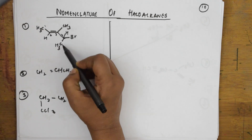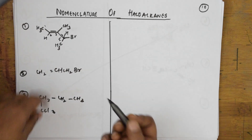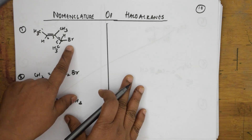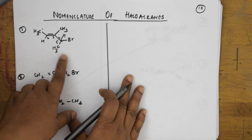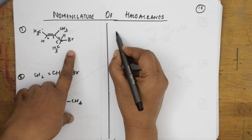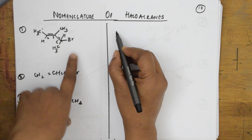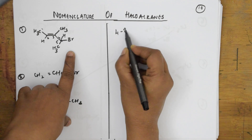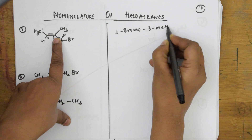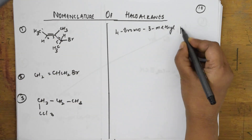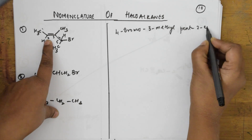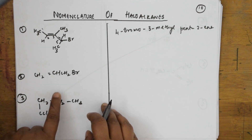According to alphabetical order, first I take bromo, then methyl. The substituent at the third carbon is methyl, and the parent chain has five carbons. At the second carbon there is a double bond, so we write two-ene. Following alphabetical order: bromo first, then three-methyl, parent chain pent, with a double bond at position two.